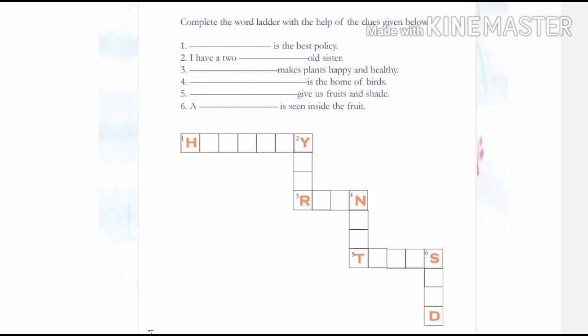First question: 'Dash is the best policy.' What is the best policy? The first letter is H and the last letter is Y — seven letters. So the answer is 'Honesty' — H, O, N... till Y. Second question: 'I have a two-dash-old sister' — four-letter word, first letter Y and last letter R. Third: 'Dash makes plants happy and healthy' — four-letter word, first letter R and last letter N.